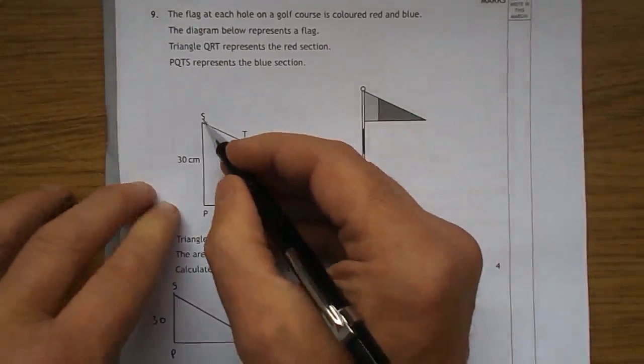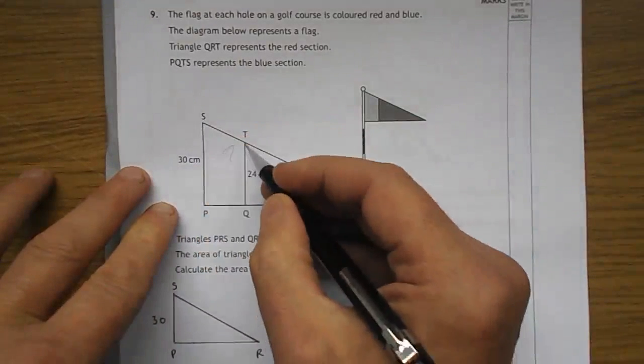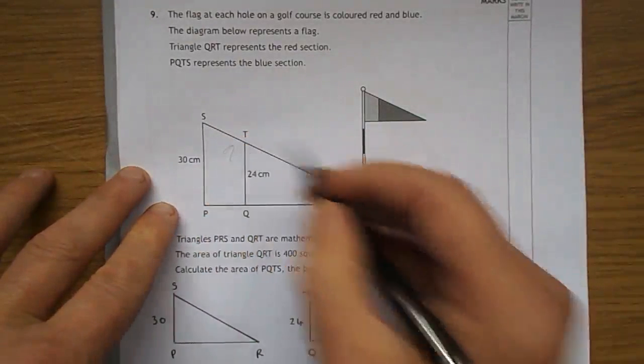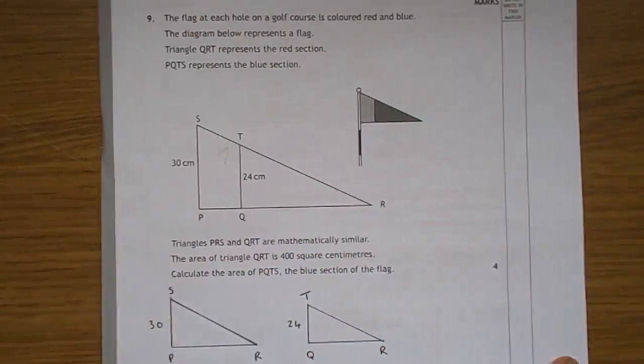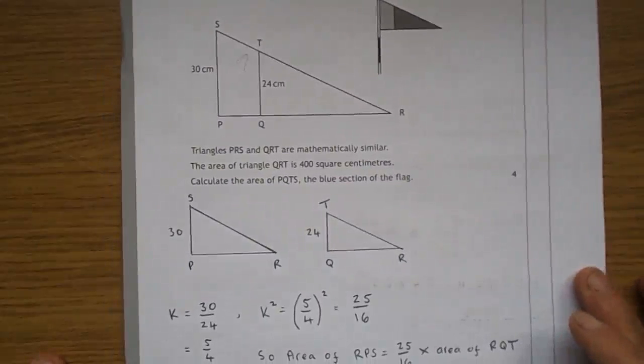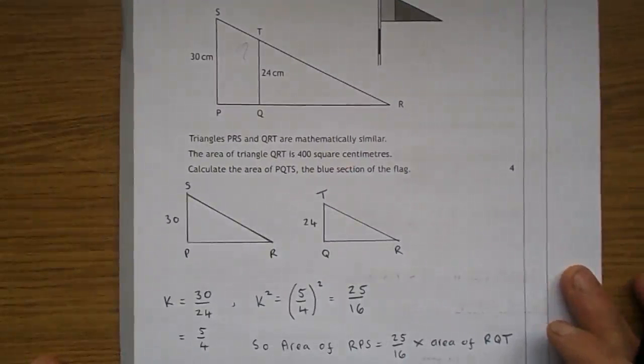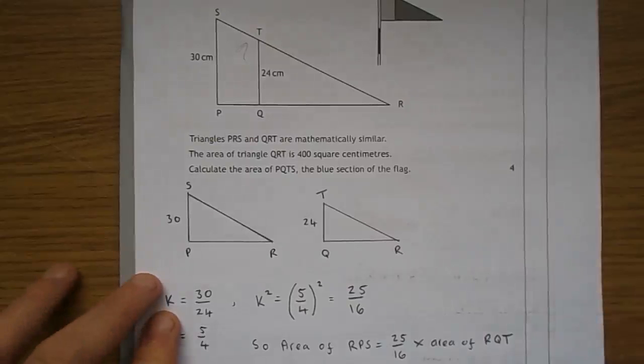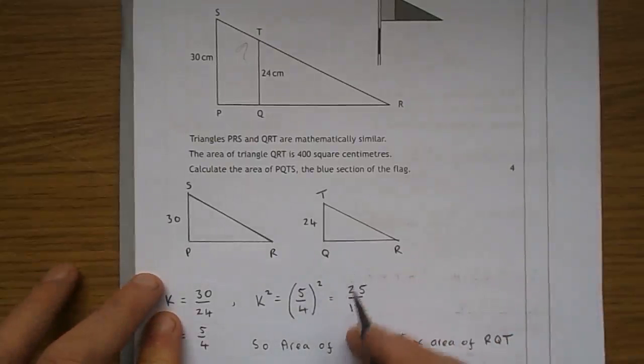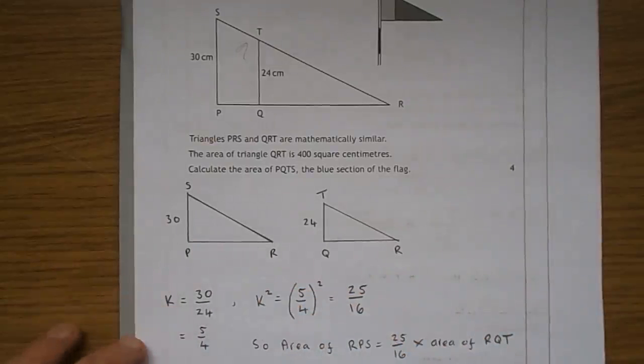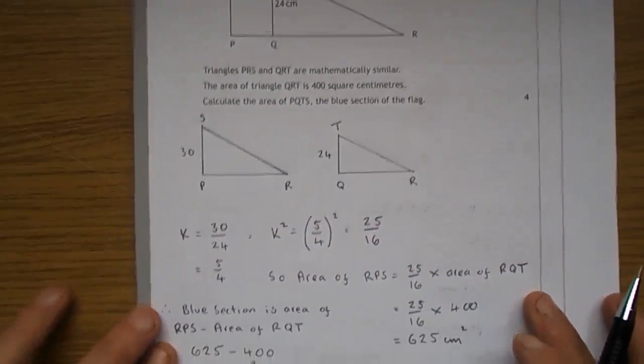And the question is basically calculate the area of the blue section there. That is obviously the area of the big triangle, take away the area of the small one QRT. A couple of wee bits of information they give you and that is that they are mathematically similar, which basically means that one is just an enlargement of the other.